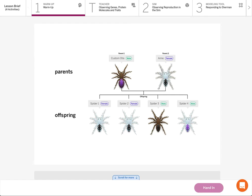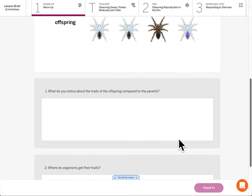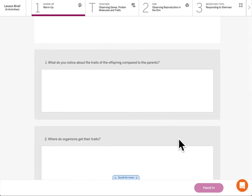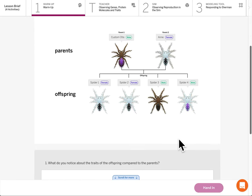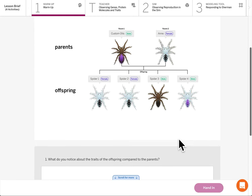Activity one, the warm-up: you're looking at some spiders, we have some parents and some offspring, and you are trying to answer two questions. What do you notice about the traits of the offspring compared to the parents, and where do offspring organisms get their traits?